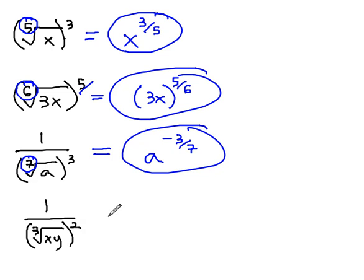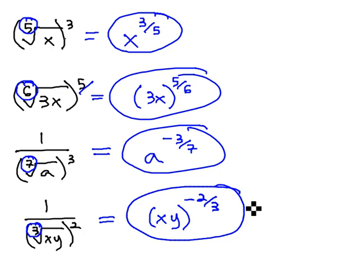Let's try one more. Again, the xy in parentheses showing the entire thing is affected by the exponent. Because we have a fraction 1 over, the exponent must be negative. And again, the denominator comes from the index. We have xy to the negative 2 thirds power.